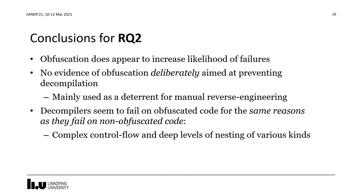Bringing this together into a conclusion for research question 2: it does appear that obfuscation increases the likelihood of failures, but we didn't find any evidence of obfuscation deliberately designed to prevent decompilation. Obfuscation seems to mainly be used as a deterrent from manual reverse engineering, and decompilers seem to fail on obfuscated code essentially for the same reasons as they fail on non-obfuscated code — namely complex control flow and deep levels of nesting of various kinds.